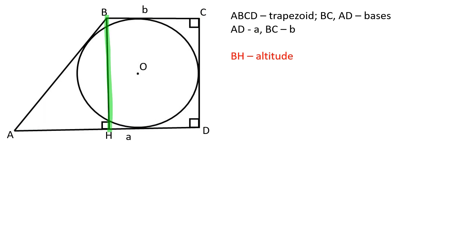Let's draw the altitude from angle B to side AD. BCHD is a rectangle, therefore BH is equal to CD and equals 2 times the radius. AH is equal to A minus B.